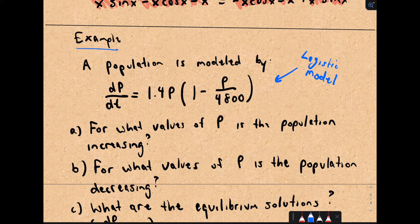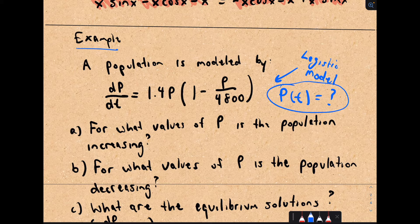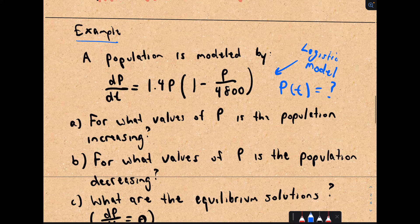In this case, I don't know what the population model is — I don't have a formula for the population at time t. Technically I'm being slightly coy, because you will end up finding a solution for this type of equation. But for now, even if you didn't know what this model is, that's okay — we can still get information just from this differential equation.